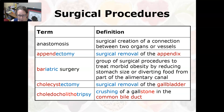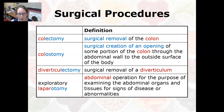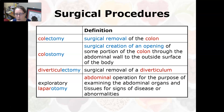Choledocholithotripsy is the crushing of a gallstone in the common bile duct. A colectomy is the surgical removal of the colon or part of the colon. A colostomy is the surgical creation of an opening of some portion of the colon through the abdominal wall to the outside surface of the body.